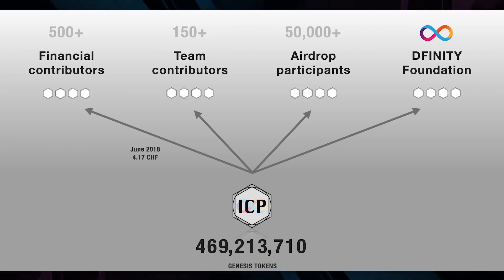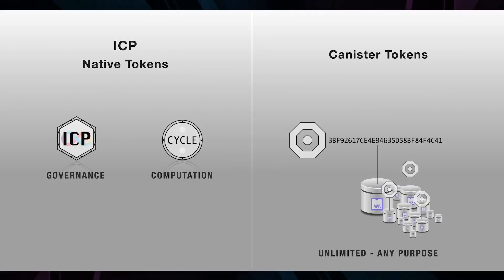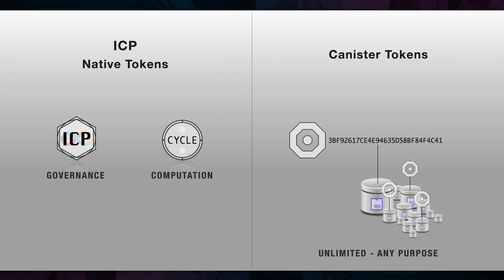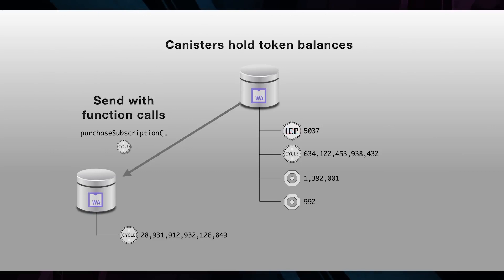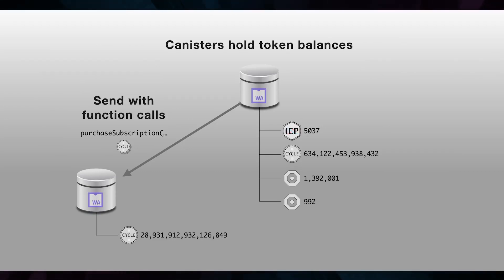But what role do ICP tokens play within the broader token ecosystem on the Internet Computer, and how might they be used? The Internet Computer actually has two native tokens: ICP and also Cycles, which are used as fuel for computation. Additionally, every canister can create its own token if it wishes, which shares its identity. A canister can hold balances of any token and can send tokens to other canisters as part of function calls.